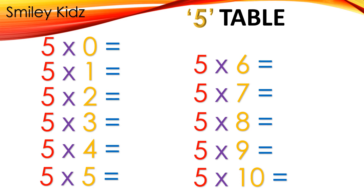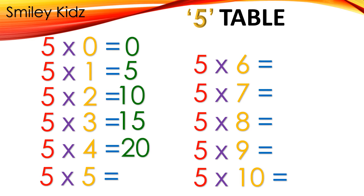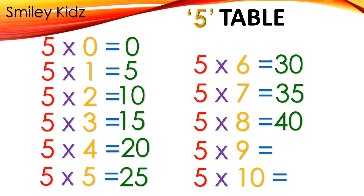Table 5: 5×0=0, 5×1=5, 5×2=10, 5×3=15, 5×4=20, 5×5=25, 5×6=30, 5×7=35, 5×8=40, 5×9=45, 5×10=50.